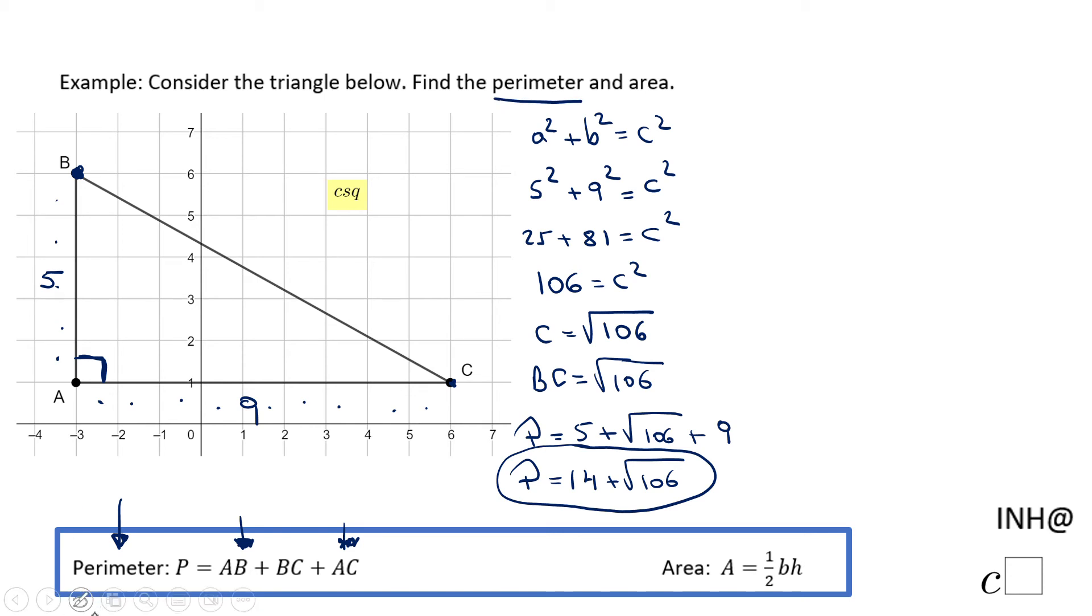Now we can move to the second part which is the area. You notice for the area I have a formula here. Area of a triangle is one-half base times height. B stands for the base, H stands for the height. But since this triangle is a special one, is a right triangle, it's not super complicated. This will be the base.